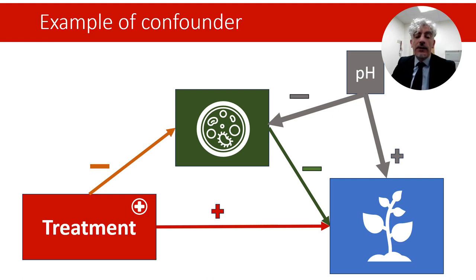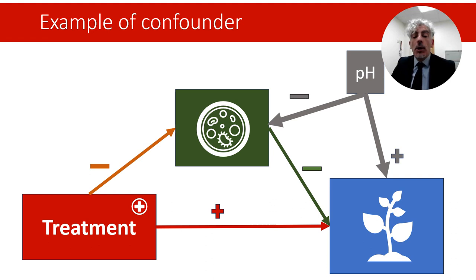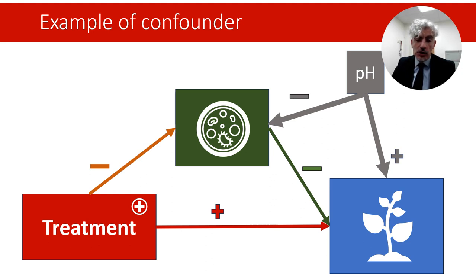In this case, the indirect effect of the treatment through fungi reduction will be biased and confounded. We would argue that the mechanism of action involves fungi, but this would not be true if some other uncontrolled mechanism, such as pH, explains the link between the mediator and the outcome.